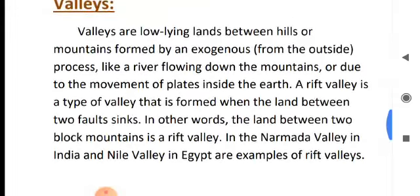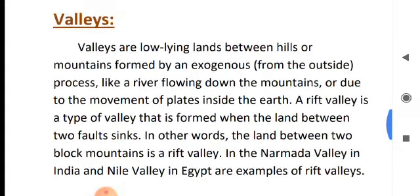Valleys. A valley is a low-lying area between mountains, formed by an exogenetic process. Exogenetic is the opposite of endogenetic — it means an outside process, for example, the erosional process by a river. Rift valley is one kind of valley: the lowland between two block mountains is called a rift valley.